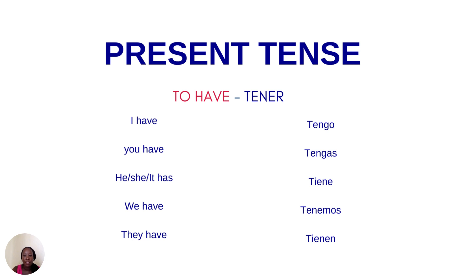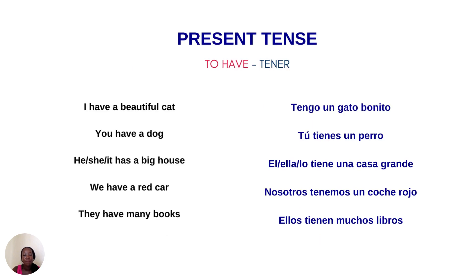So let's have a look at some examples with 'have.' I have a beautiful cat. You have a dog. He, she, it has a big house. We have a red car. And they have many books. So that's just a simple introduction to the present tense. I hope this has been helpful, and I'll see you in the next video.